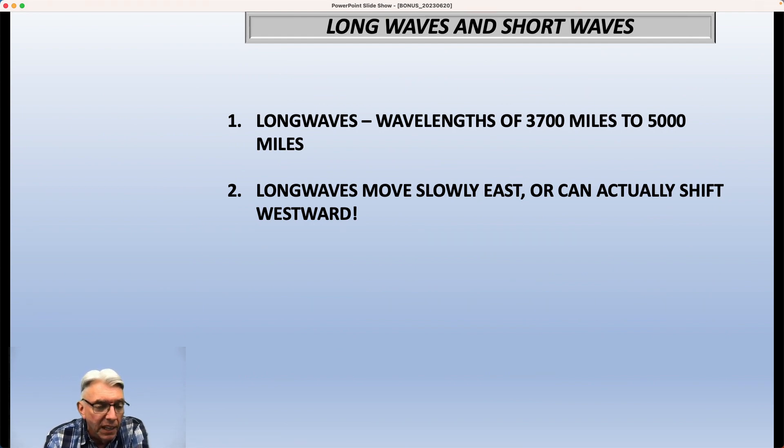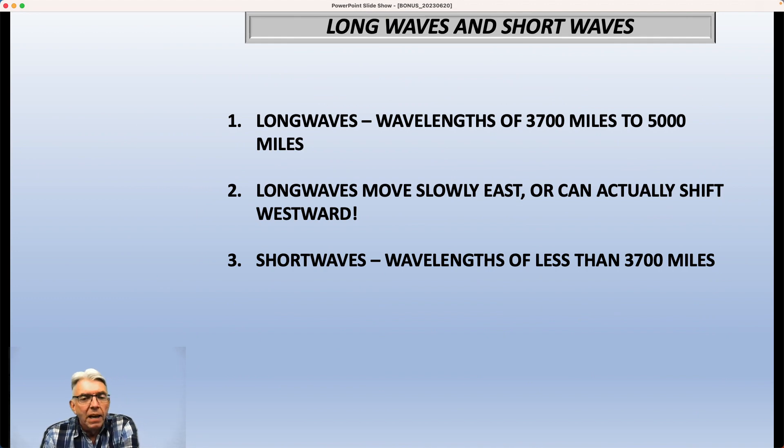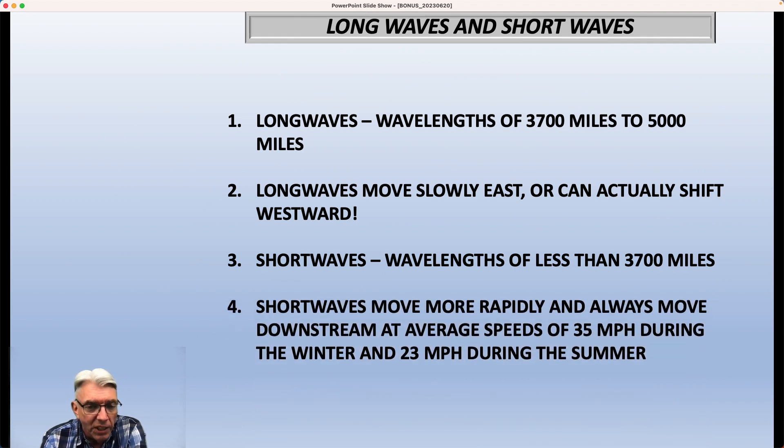which is what we appear to be seeing in the forecast for late June and early July. Now short waves have wavelengths of less than 3,700 miles and in most cases way less than 3,700 miles. We may be talking about waves that have a wavelength of half the United States or a third of the United States. And short waves always move downstream and they move more rapidly than long waves do at an average speed of about 35 miles an hour during the winter and 23 miles an hour during the summer because the jet stream generally is weaker. In fact, it's always weaker in the summer than it is in the winter.